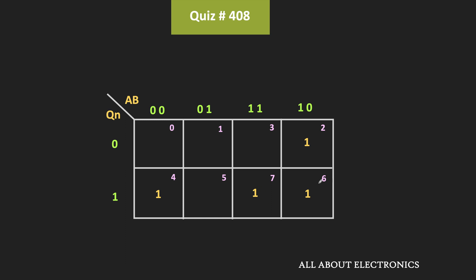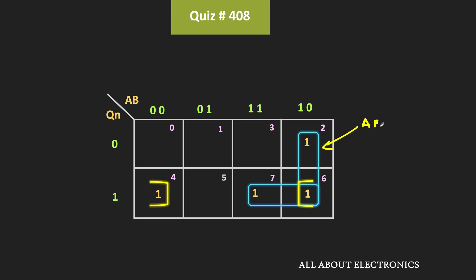In the K-map, we can make a group of the two ones — minterms m2 and m6. Similarly, to cover minterm m4, we can make a group of those two ones. And likewise, to cover minterm m4 and m6, we can make a group of m4 and m6. By making these 3 groups, we can cover all the minterms. This first group corresponds to the term a·b'. This second term corresponds to qn·a, because in this group the variable qn remains the same and variable a is also not changing, and the value of both variables is 1. This third group corresponds to qn·b', because the value of variable qn is equal to 1 while the value of variable b is equal to 0.